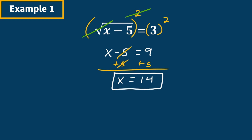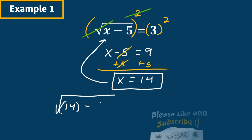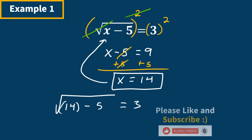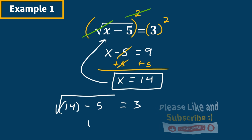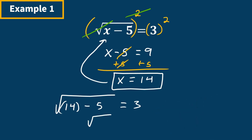So x = 14 is our solution. However, whenever we're dealing with radicals we always want to check our answers. We plug x back in: the square root of 14 minus 5 equals 3. That gives us the square root of 9, which equals 3, and 3 equals 3 — therefore this answer is correct.